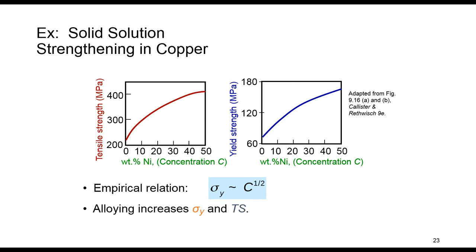An example of solid solution strengthening is provided here. Here, copper has been strengthened by introducing nitrogen to the material. As you can see here, tensile strength and yield strength increase with the percent or the weight percent of nitrogen. By increasing the concentration of nitrogen, you see tensile strength and yield strength are increasing. So empirically, we can find this relation that the yield strength has a direct relation with the square root of concentration. And in these examples, we see that alloying actually increases tensile strength and yield strength.